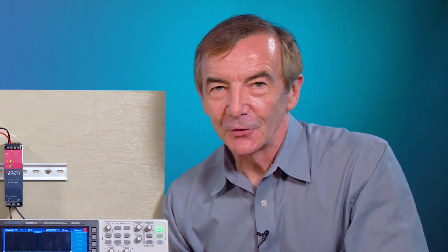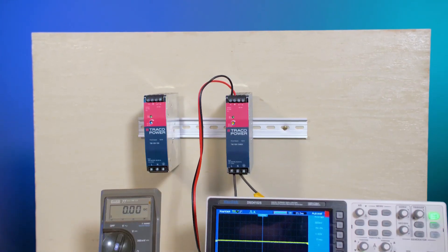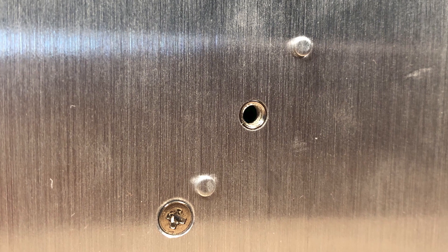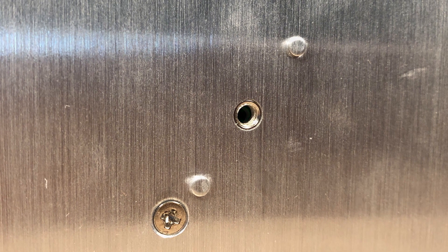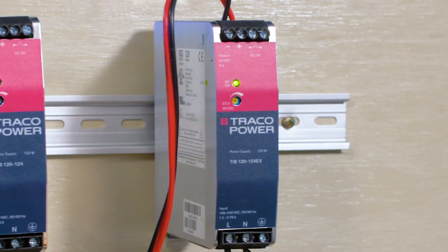Except for the Hazloc approvals on the EX versions, all TIB supplies have the same electrical and mechanical features. These supplies mount on a DIN rail, as you can see with our little demo here, but they also have a screw hole on one side that accepts the plastic DIN rail clamp and lets them be side mounted for applications where there isn't much room.